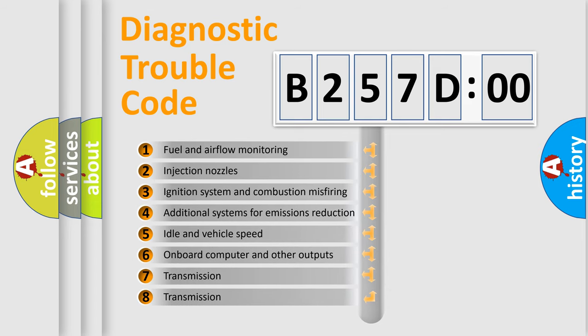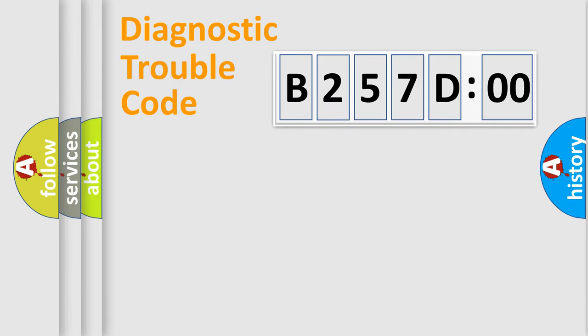The third character specifies a subset of errors. The distribution shown is valid only for the standardized DTC code. Only the last two characters define the specific fault of the group.